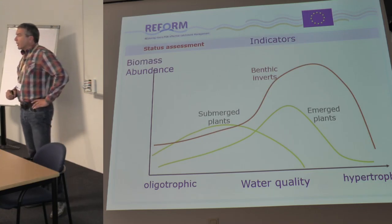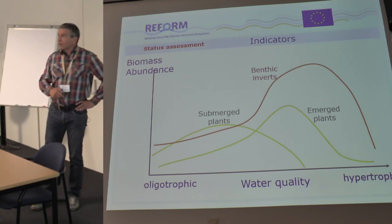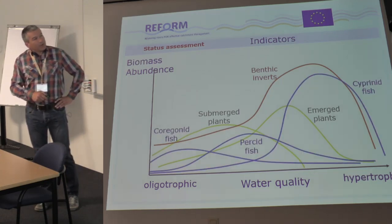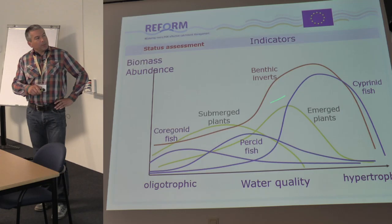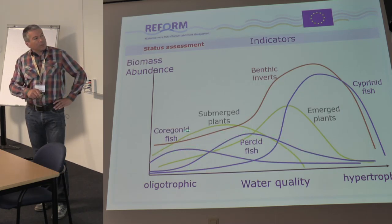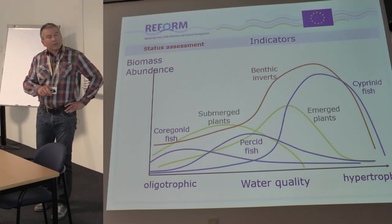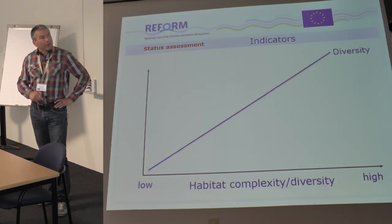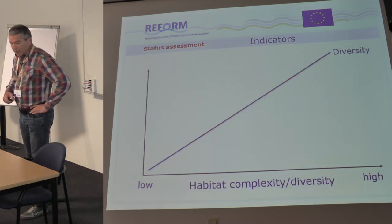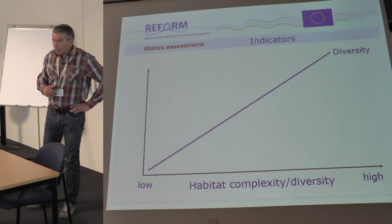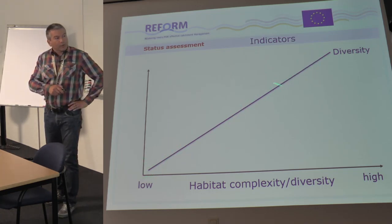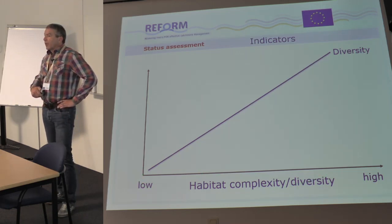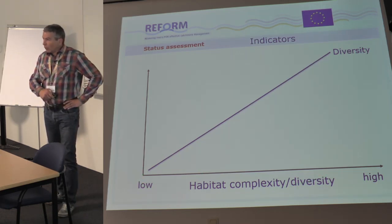Towards the end of the eutrophication gradient we find mass development of species with lower oxygen requirements. The same applies to fish — we have shifts in fish communities, with biomass generally going up but a shift in dominant species from salmonid fish to cyprinid fish, which are typically able to tolerate higher oxygen depletion. Another point where habitat complexity plays a role is species diversity: more complex habitats support more species and higher diversity, which is reflected in species composition.